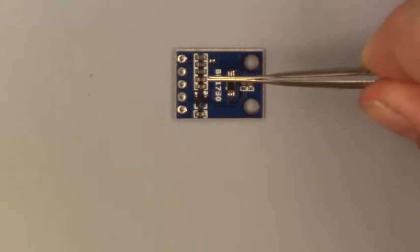Next, you're going to have to remove two 472 resistors from the top of the BH1750 light sensor.